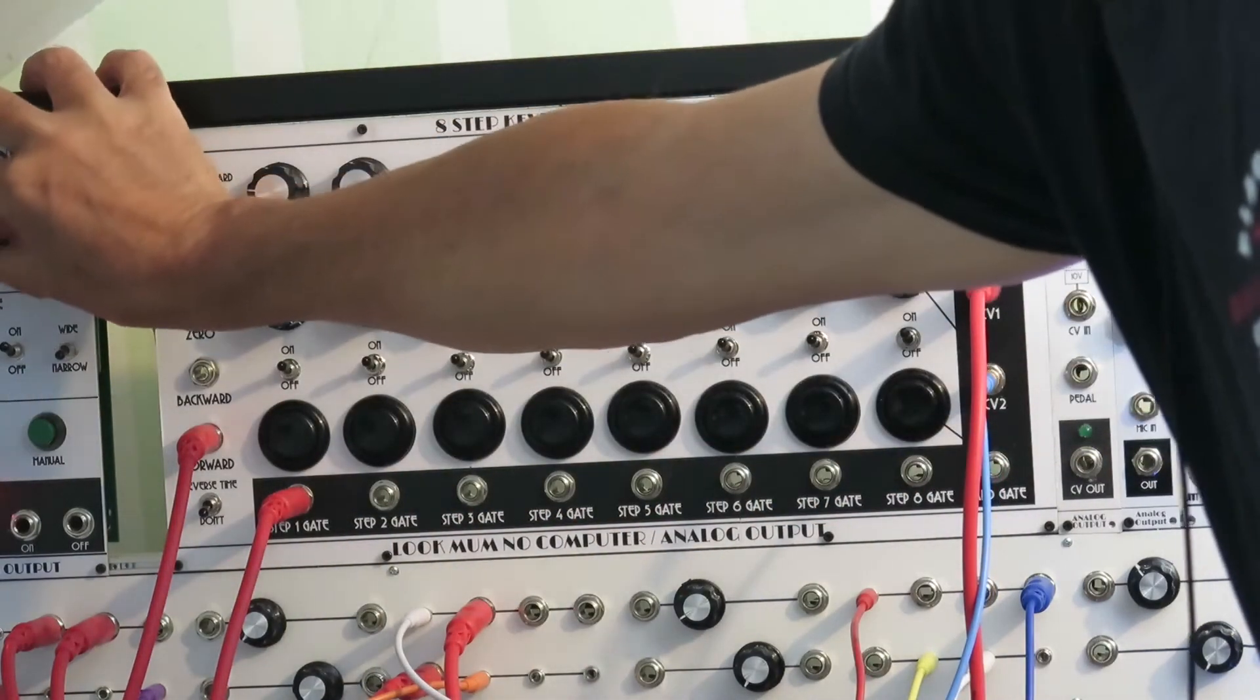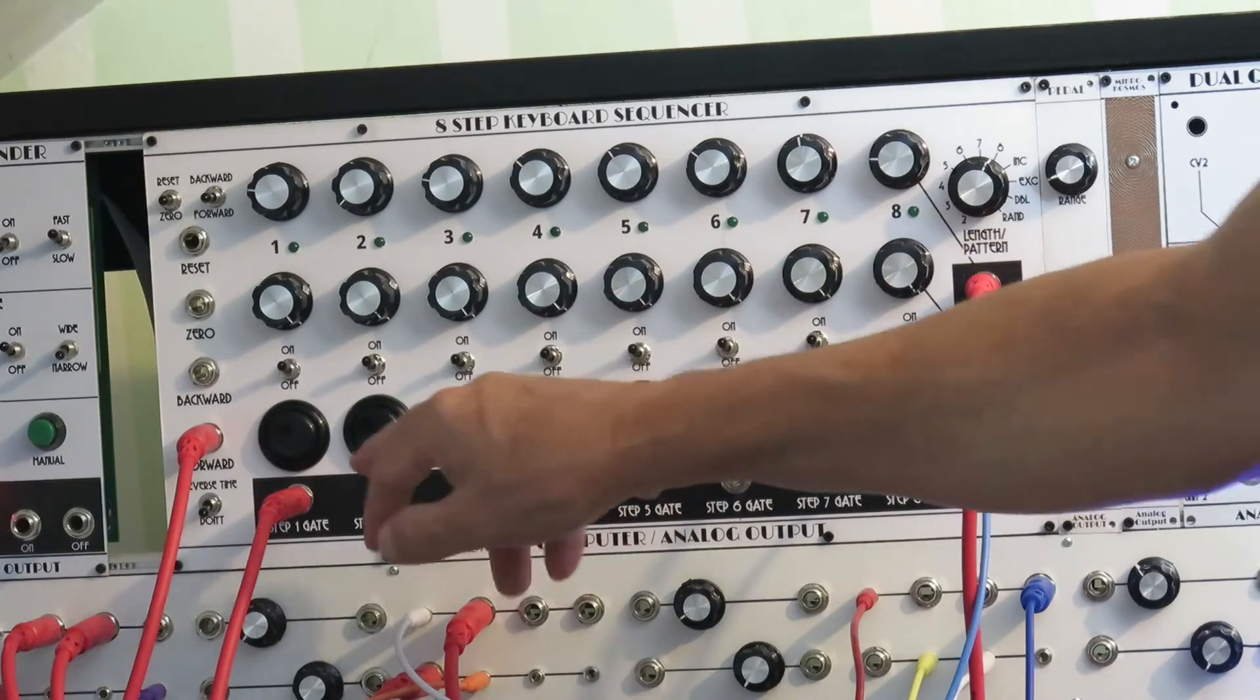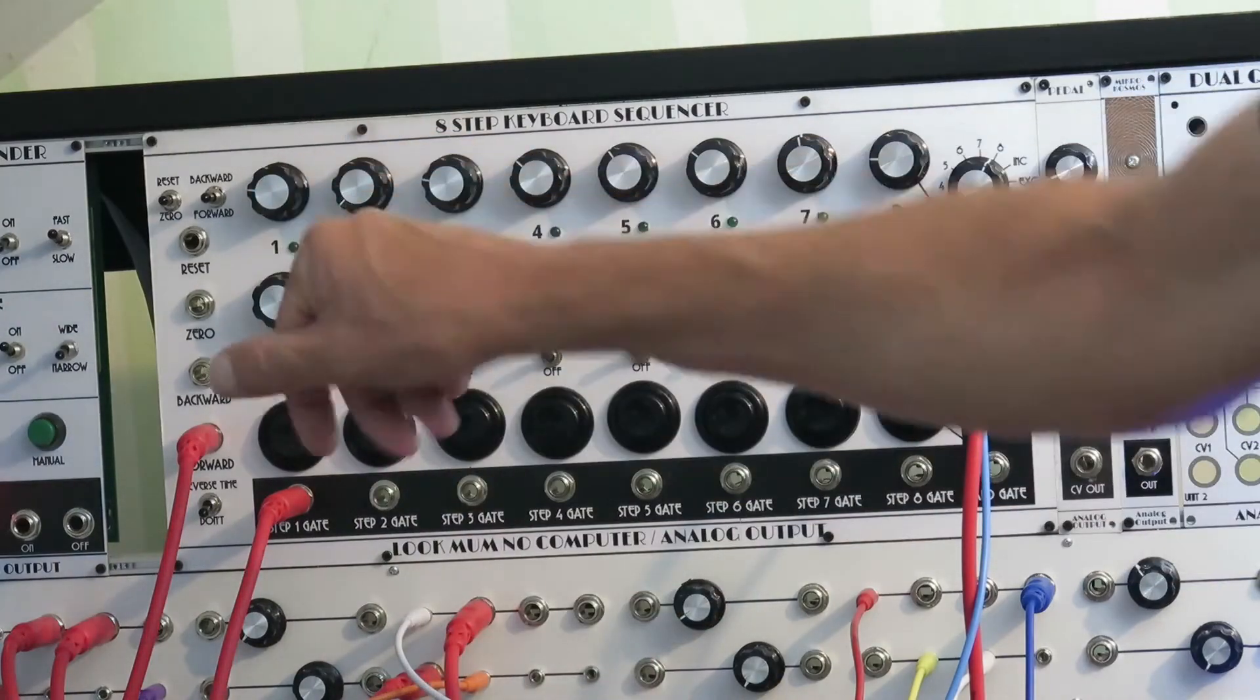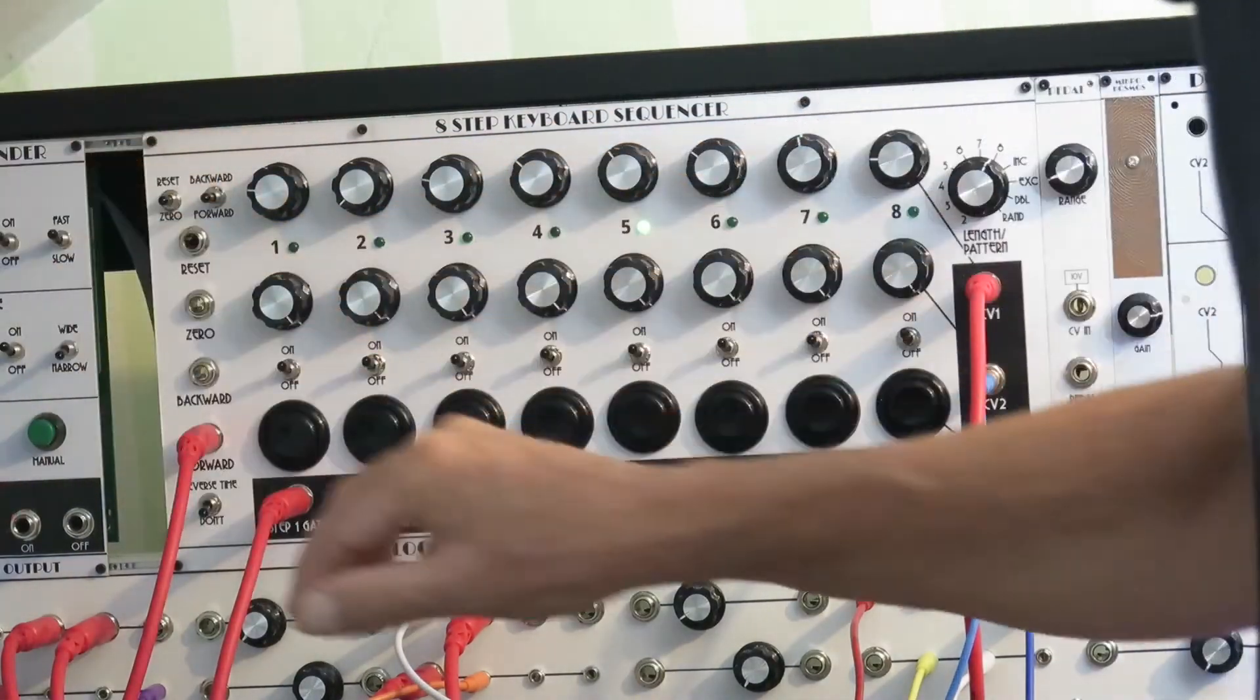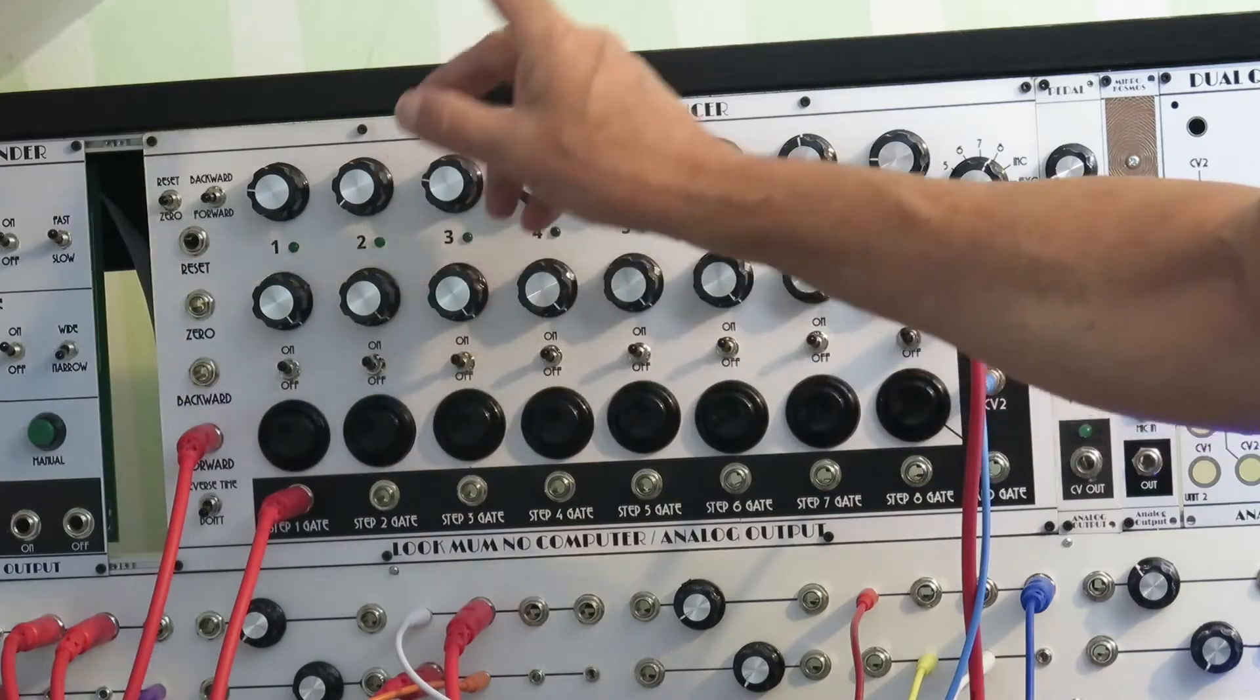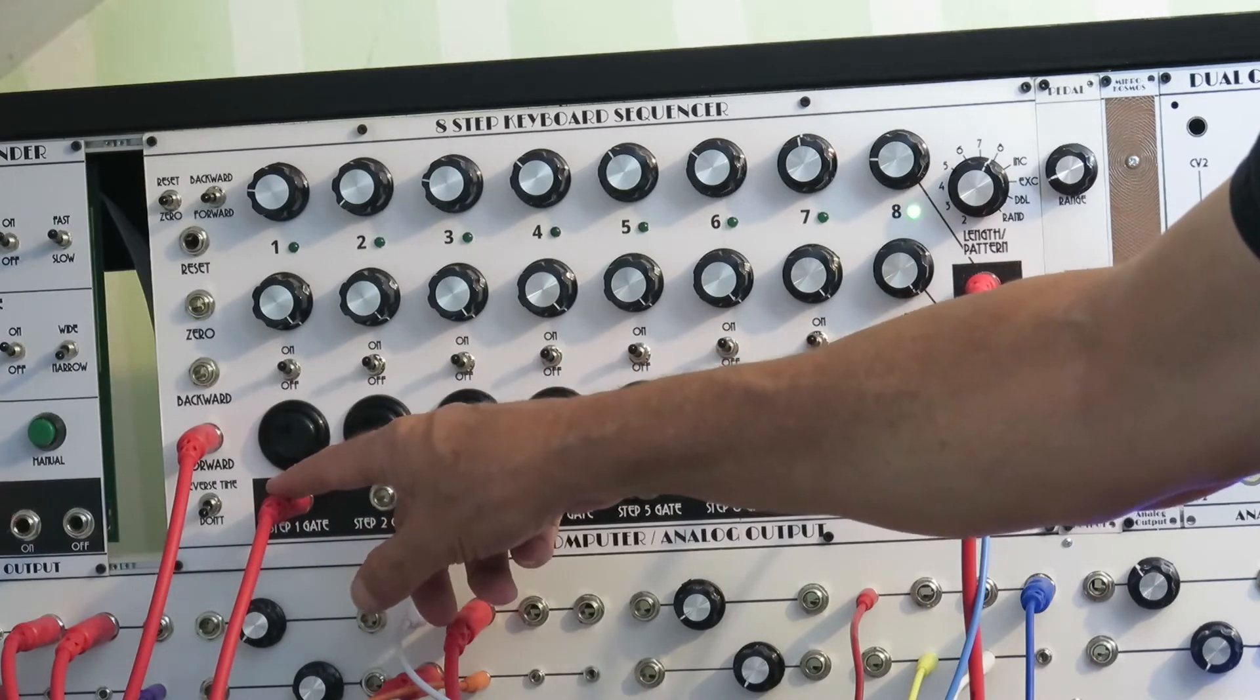Also added this row of switches here, which turns off a gate or a step. What happens is when it hits that step, it doesn't make a gate and it sends zero volts to both of the control voltage outputs. So if I'm running a sequence here, I neglected to mention, you can probably hear on the first step, I'm using a gate to trigger a drum module.